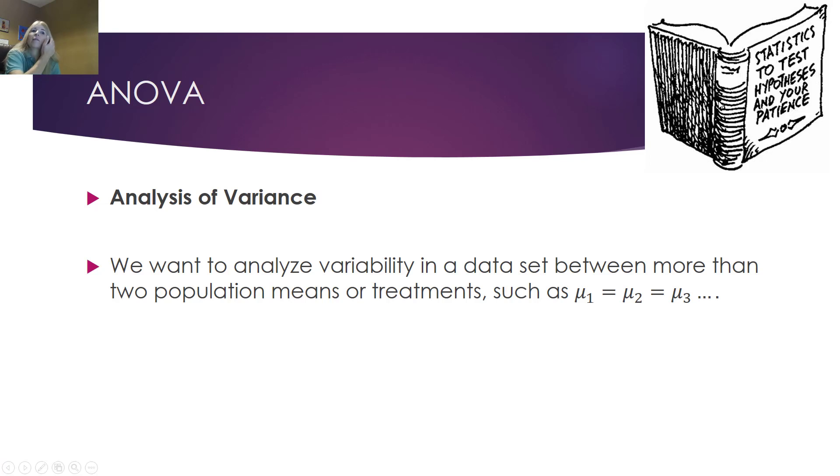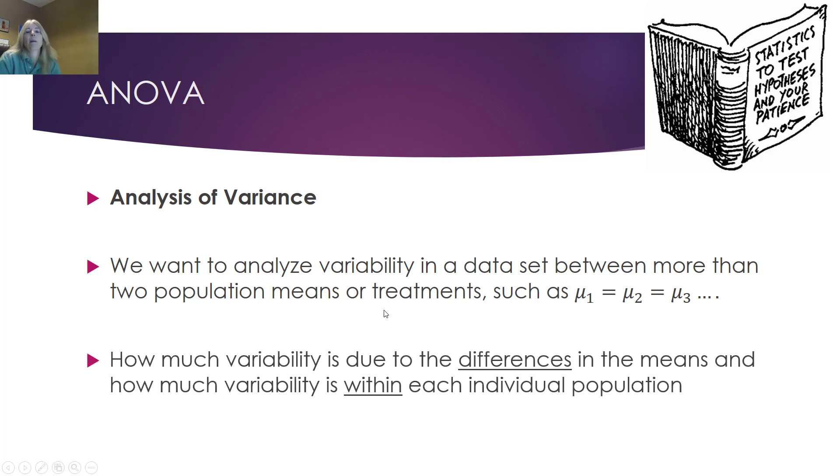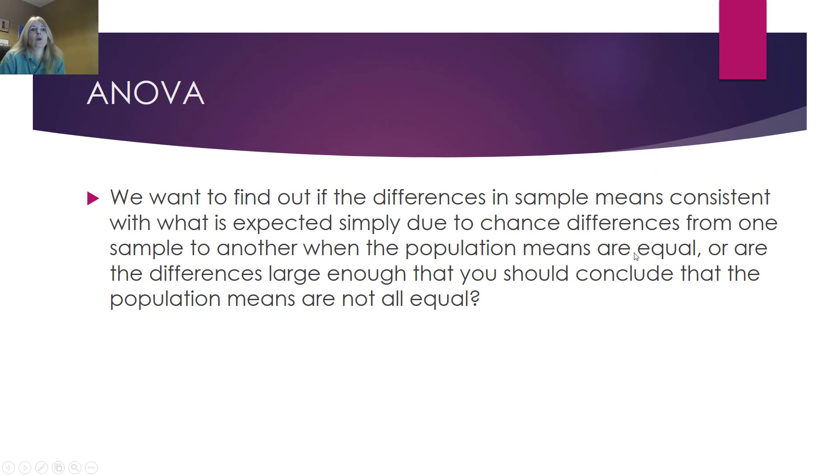This analysis of variance is when we want to analyze the variability. In other words, is there a big spread between the different means of more than two populations? A lot of times these are called treatments. We're looking to see if a lot of the variability is due to the differences in the means, or actually within the means. We want to find out if the differences in sample means are consistent with what we would expect or simply due to chance differences from one sample to another.